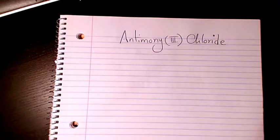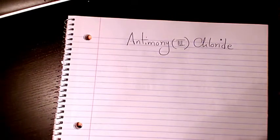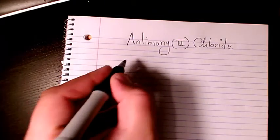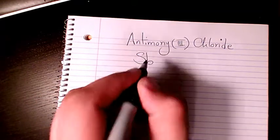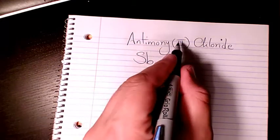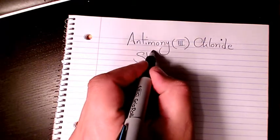What's up guys, this is Massy. Welcome to my channel. In this video I want to write the molecular formula for antimony(III) chloride. Antimony is Sb, and since it's three here, it's 3+.